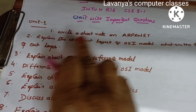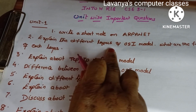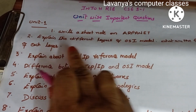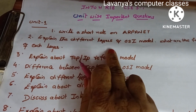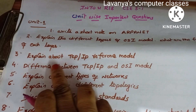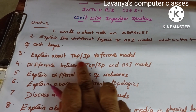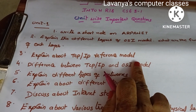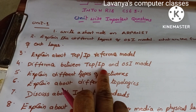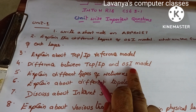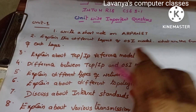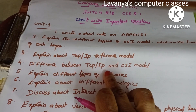Second question: explain the different layers of the OSI model and the functions of each layer — a very important, fundamental question. Next, explain about the TCP/IP reference model. They also ask: what is the difference between TCP/IP and OSI model? If you know the second and third questions, the fourth is automatically covered.